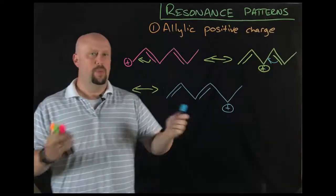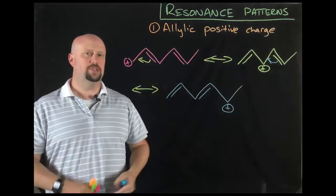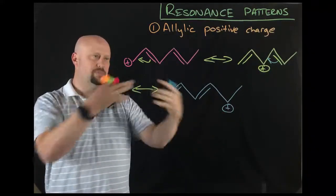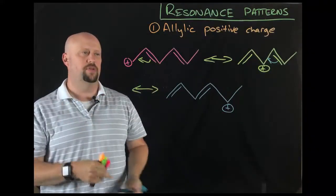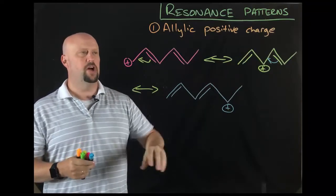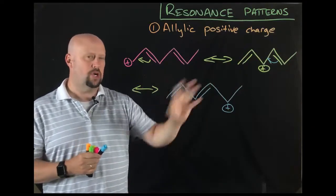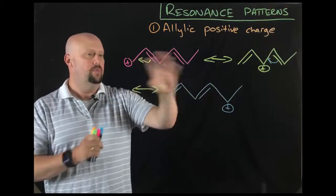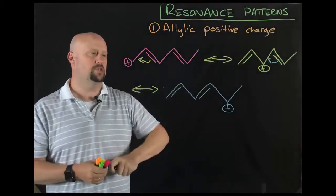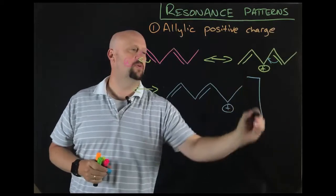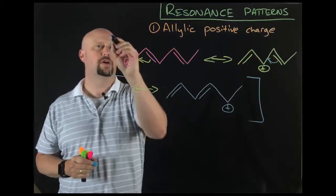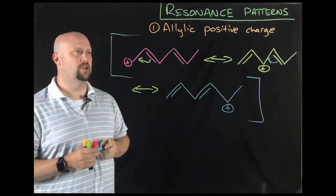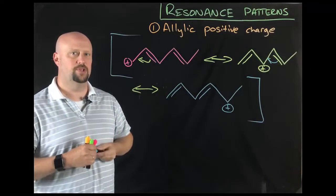And now where has that positive charge gone? Well, it has now shifted over here. So again, remember, and I keep hammering on this, none of these structures by themselves are correct. We would take them sort of as an amalgam of all of them together. What we'll see later on is that sometimes there's a more correct structure given a certain scenario. But for now, there's three possible resonance structures. Remember, to make this fully correct, we would put the brackets around each side of that. So that's pattern one, allylic positive charge.